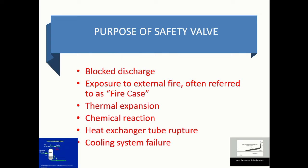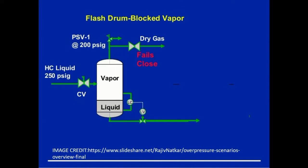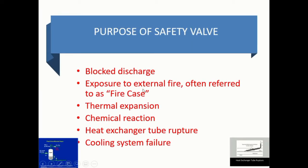Now we will see the purpose of using the safety valve. Suppose there is a blockage of the device — for example, in a flash drum where blockage vapor is present. Because of the blockage, vapor can pressurize the liquid, and in such cases we need to exhaust it into the atmosphere or into another vessel. Whenever the pressure reaches 200 psig, it will exhaust to atmosphere or another vessel. Next is exposure to fire — whenever there is a fire, temperature increases, and since temperature is directly proportional to pressure, overpressure occurs and the safety valve reacts.